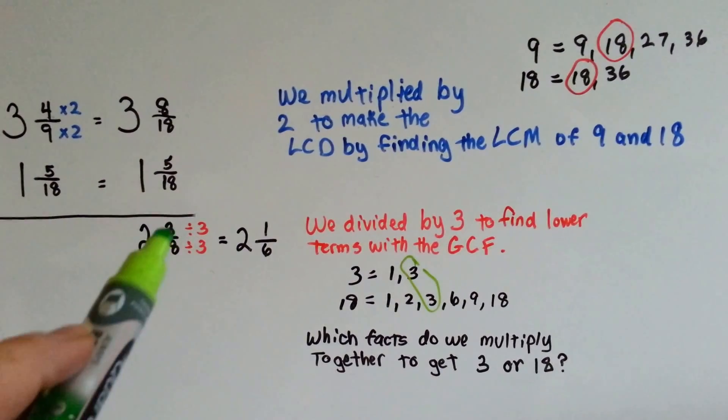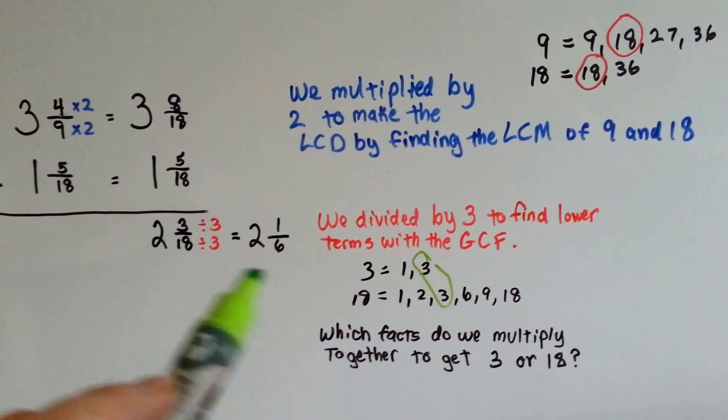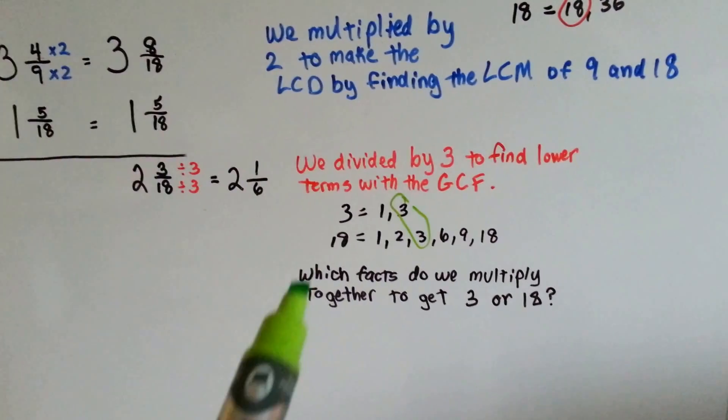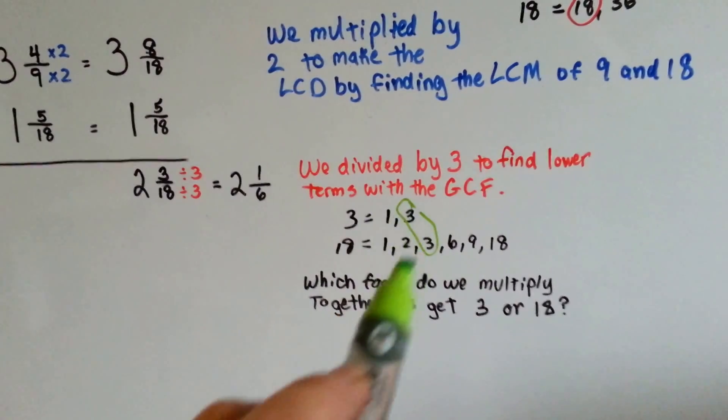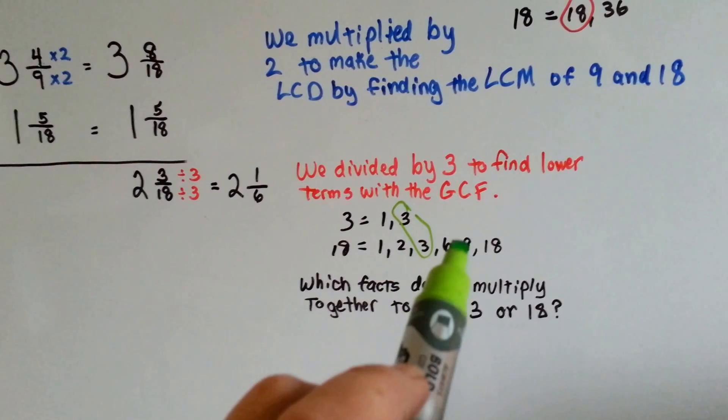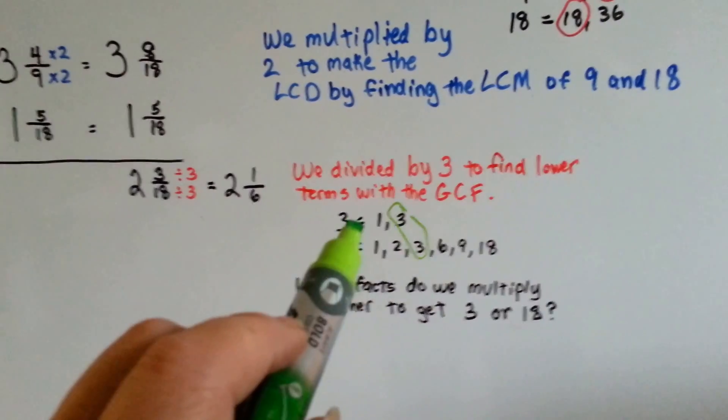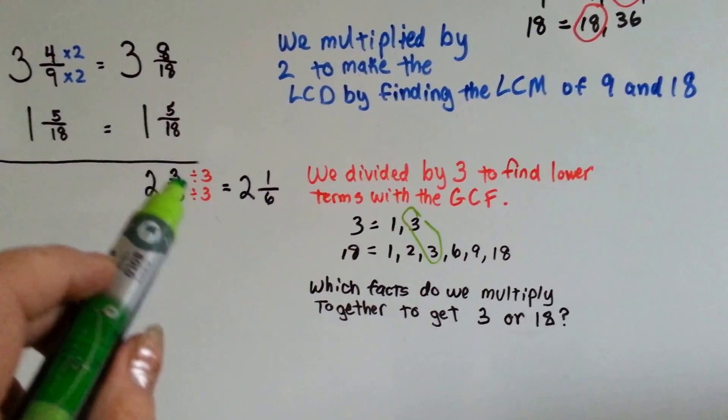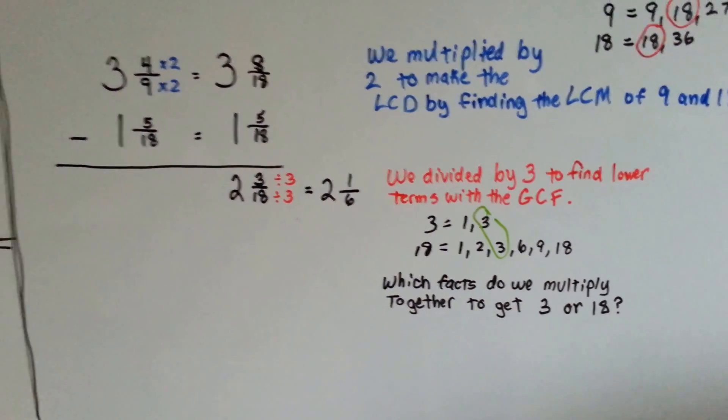But we can see that the three eighteenths can still be made smaller. So we divide by three to find the lower terms with the greatest common factor. So the factors are the facts that we multiply together to get the three and the eighteen. What do you multiply together to get a three? A one and a three. What do you multiply together to get an eighteen? A one and an eighteen, a two and a nine, and a three and a six. So what's the biggest one they have in common? Well, because three only has one and three, we know we can't use one. It's not the biggest. We use the three. Three divided by three is one. Eighteen divided by three is six. And we end up with two and one sixth.